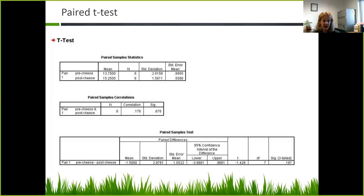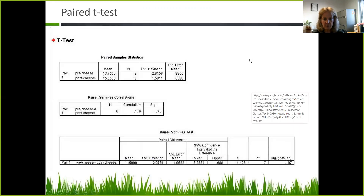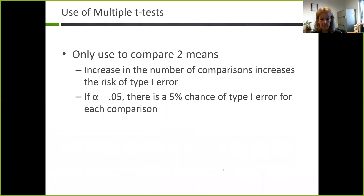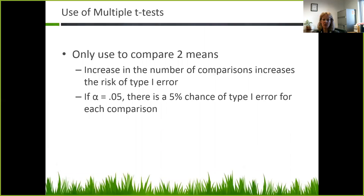The paired data t-test printout looks something like this — you can see pre and post scores, and a two-tailed paired sample t-test was done here. The t-test is only used to compare two means. Increasing the number of comparisons increases the risk of type 1 error — if alpha is at .05, there is a 5% chance of type 1 error for each comparison. So you can't use multiple t-tests.